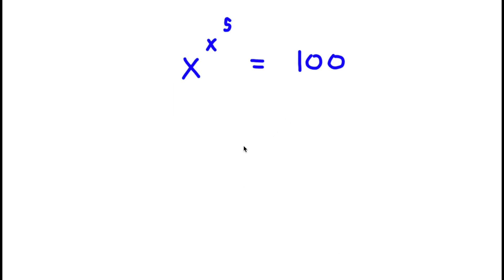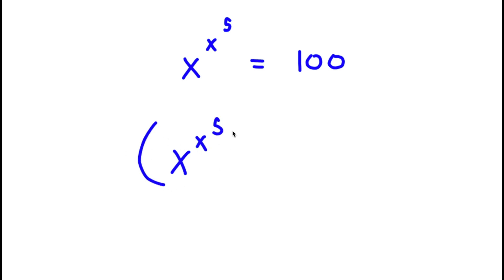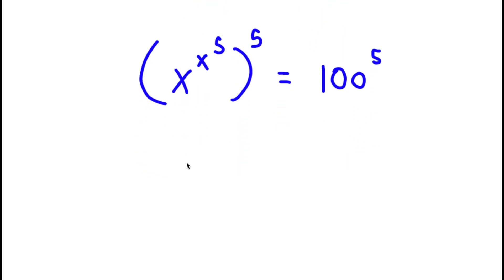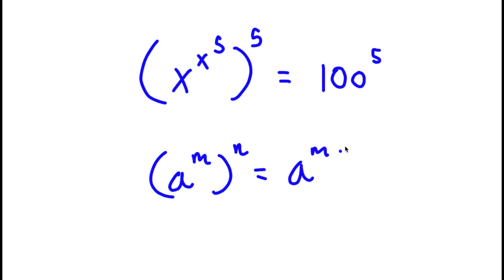In this problem, I have x to the power of x to the power of 5 is equal to 100. The first thing I'm going to do is take the power of 5 on both sides. So now I have x to the power of x to the power of 5, to the power of 5, is equal to 100 to the power of 5. Now if I have something in the form a to the power of m to the power of n, this is the same thing as a to the power of m times n.